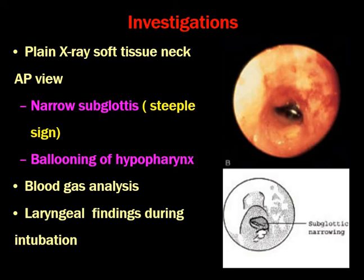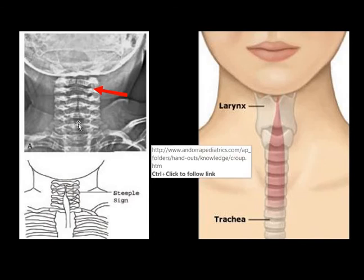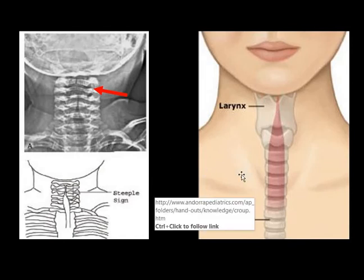Investigations for acute laryngotracheobronchitis: plain X-ray soft tissue neck AP view — note this is the AP view, compared to the lateral view used for epiglottitis. The finding is a narrowed subglottis, since the bulk of disease is in the subglottic area, producing the steeple sign. Ballooning of the hypopharynx is also seen. Blood gas analysis must be performed when the patient is hypoxic. Laryngeal findings during intubation show subglottic involvement with possible sloughing. On the X-ray image, the widened lower part and narrowed upper part of the airway forming a steeple — or pencil — shape is the steeple sign.